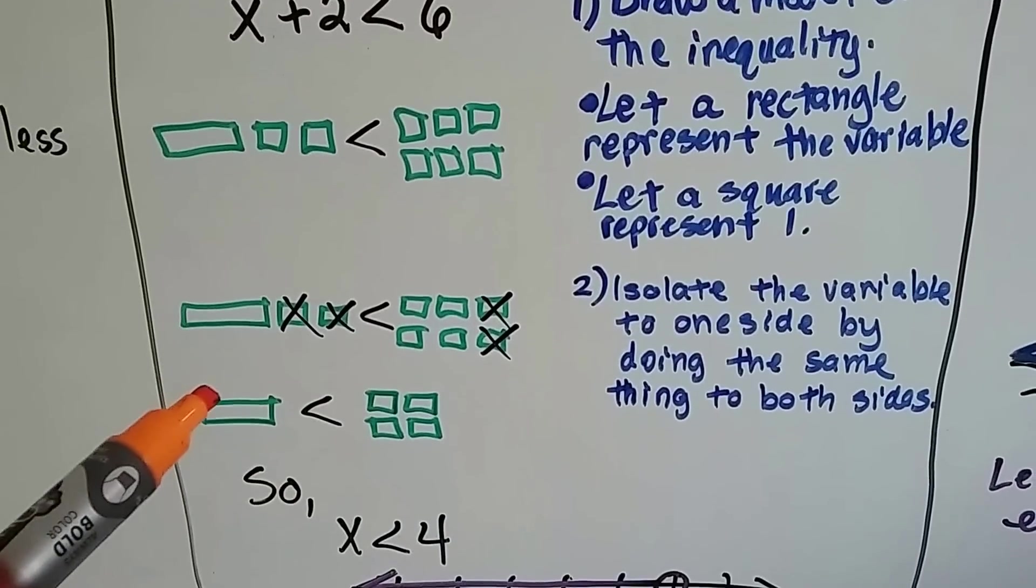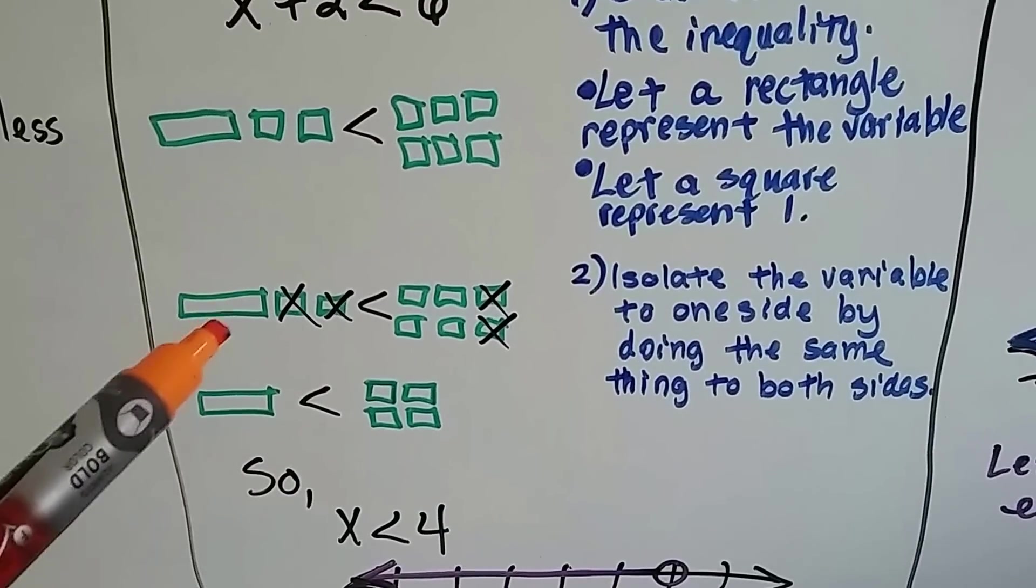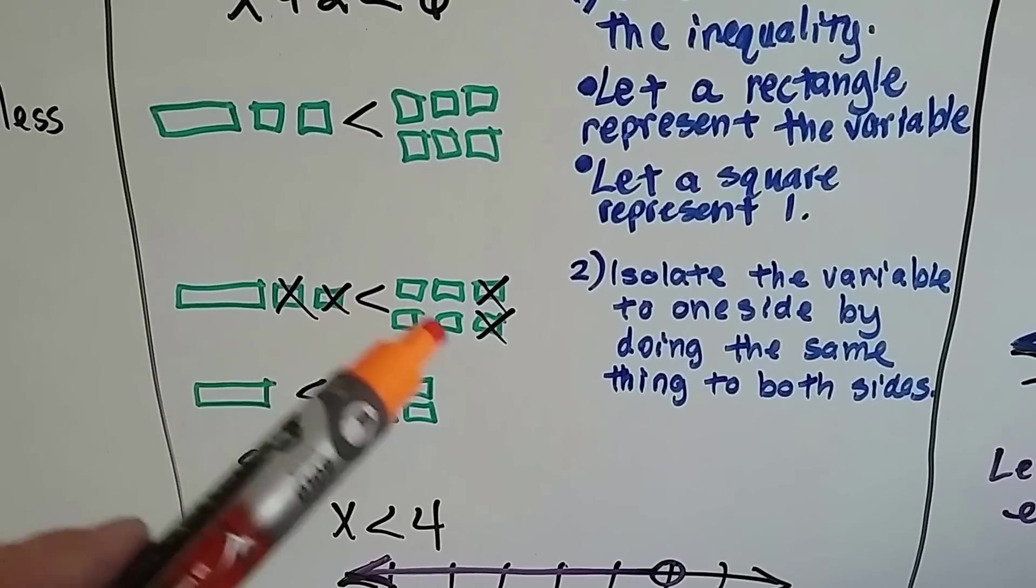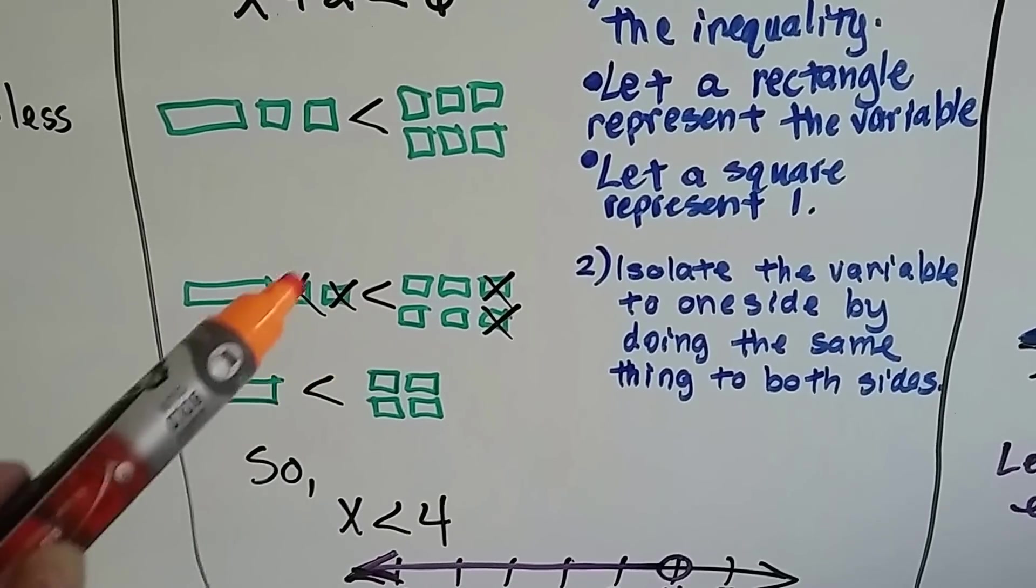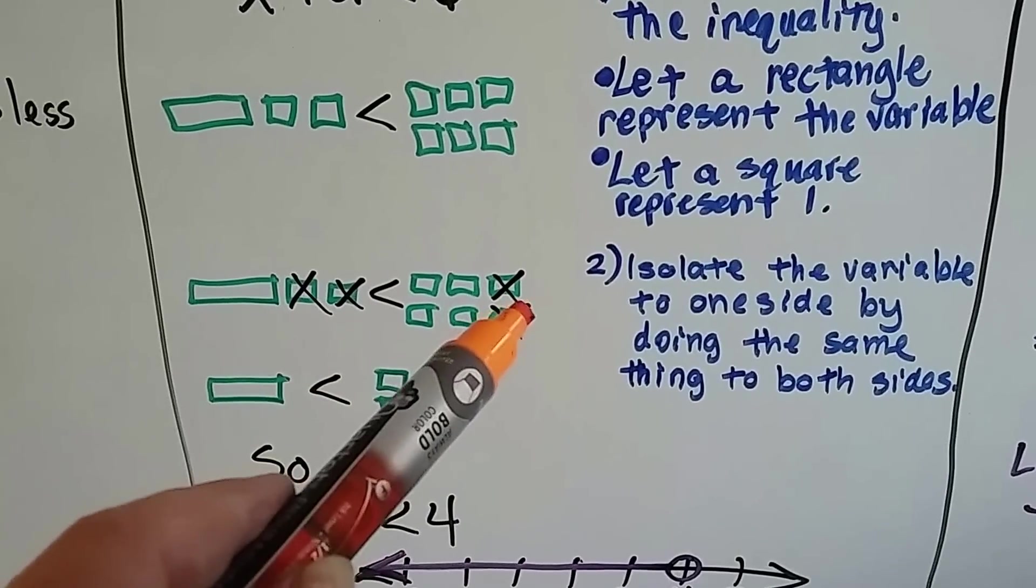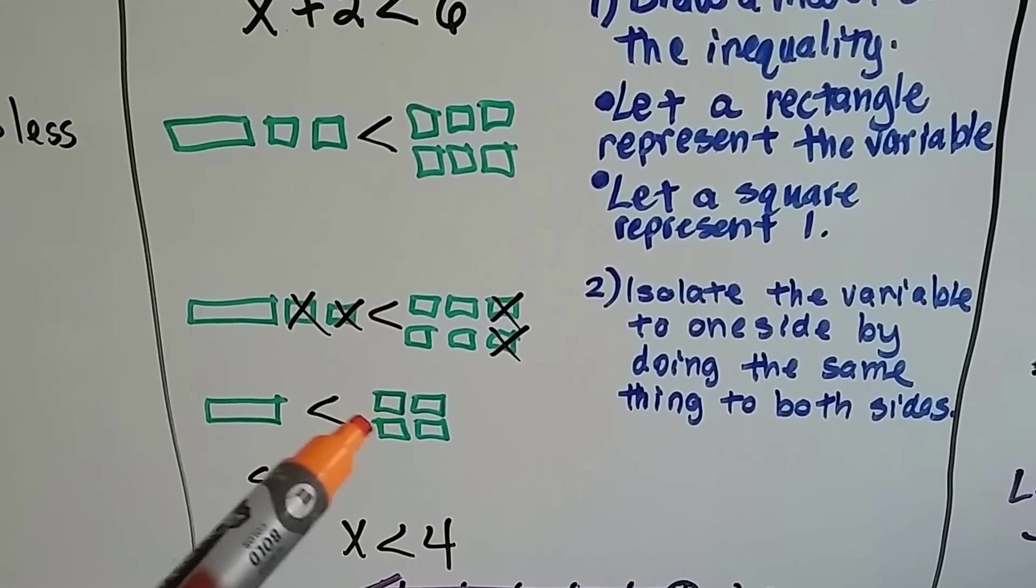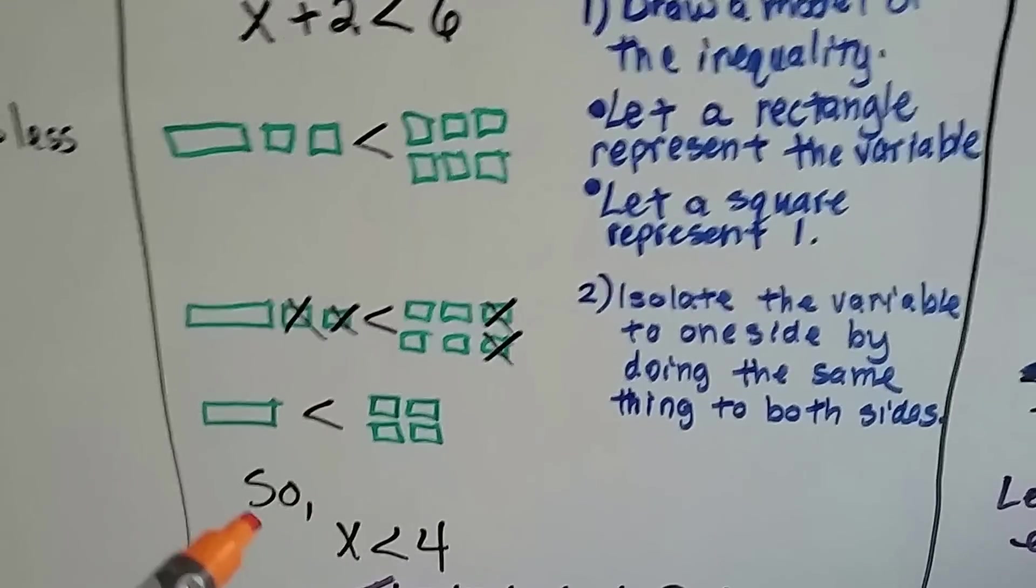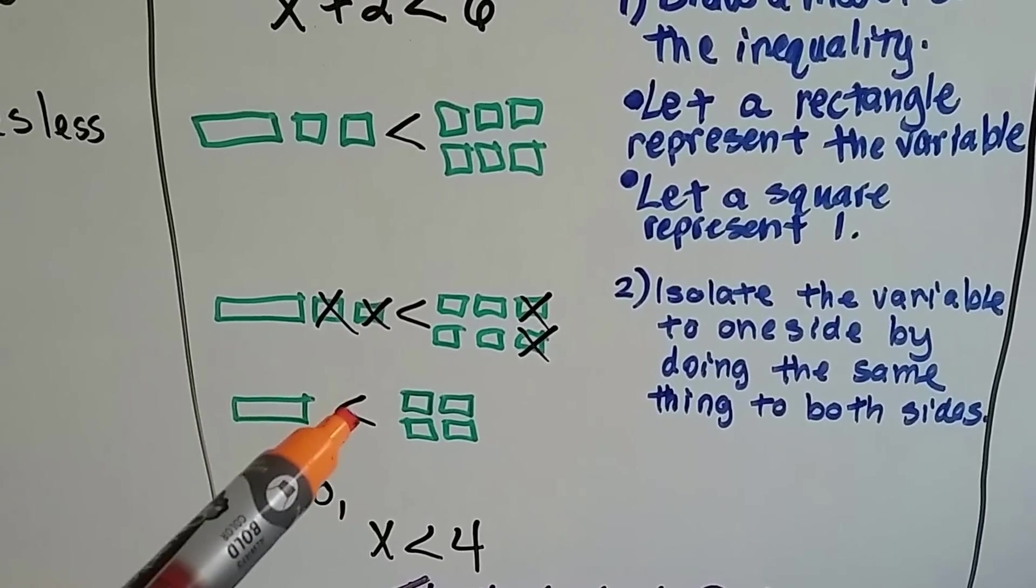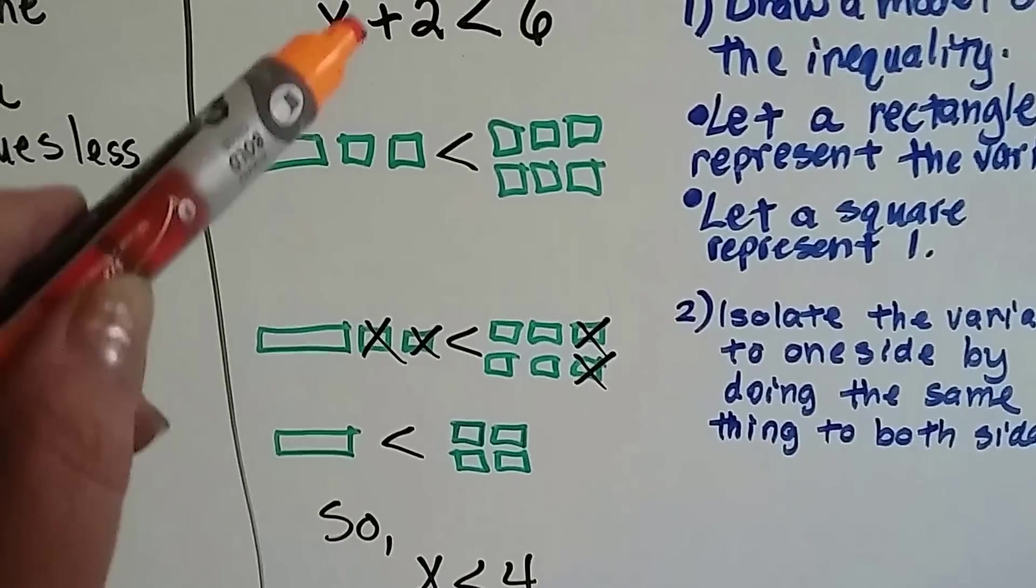Then to isolate the variable to one side, the rectangle, what I did was the same thing to both sides. So I took away 2 squares and I took away 2 squares. And what I was left with was my rectangle is less than the 4 squares, which means x is less than 4.